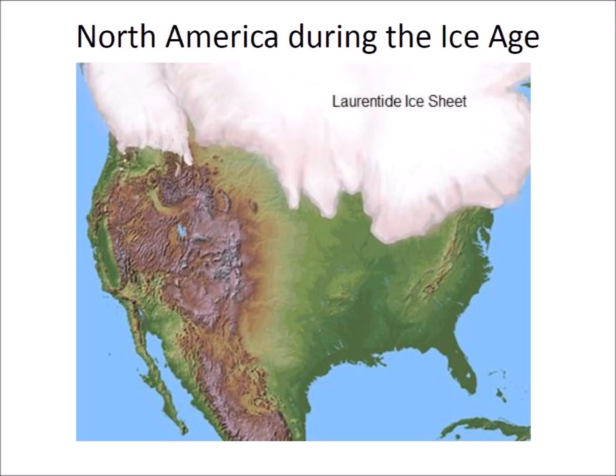Toward the end of the Pleistocene Epoch, North America was covered with a layer of ice more than two kilometers thick. The Laurentide Ice Sheet covered most of Canada and the northern portion of the United States. Mastodons and other large animals inhabited the land, and the Clovis people hunted them with weapons fitted with finely crafted arrowheads.